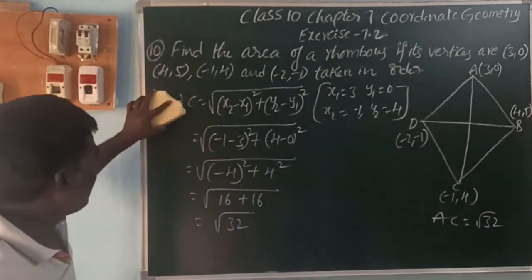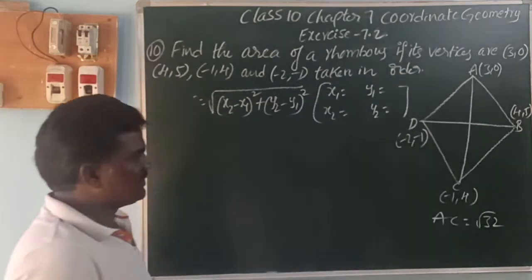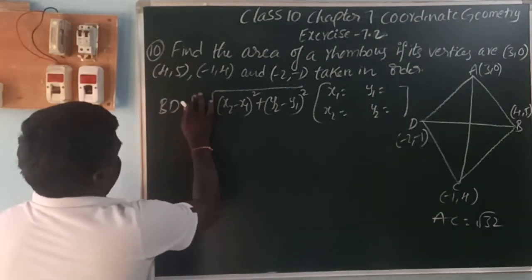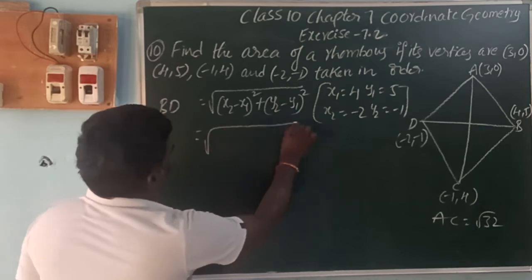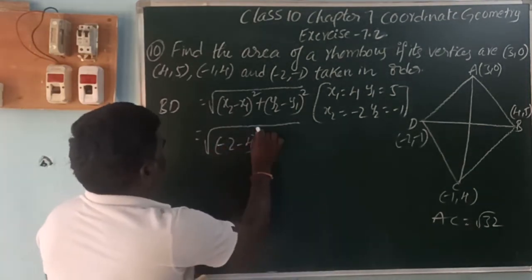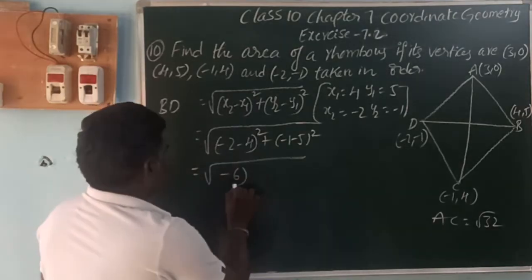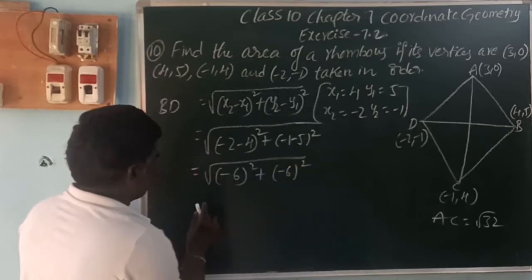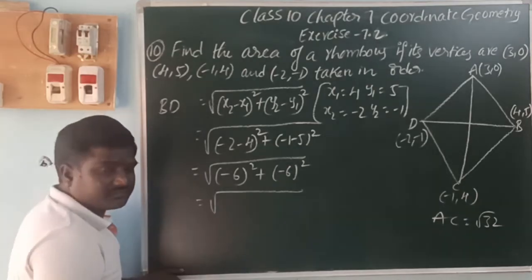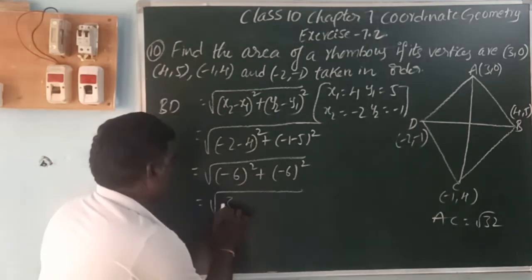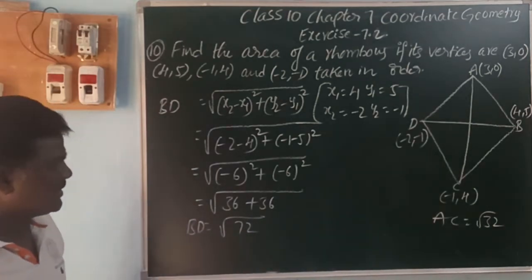Next, diagonal BD. B is (4, 5) and D is (-2, -1). BD = √((-2-4)² + (-1-5)²) = √((-6)² + (-6)²) = √(36 + 36) = √72. The length of BD is √72.